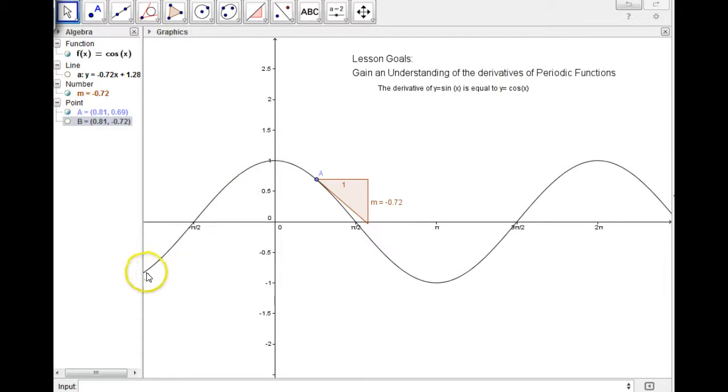Now what I've done here is draw up another function. You can see that this is a cosine function. And we're going to do the same thing here. So you can see at the start of a cosine function, the derivative is equal to 0.